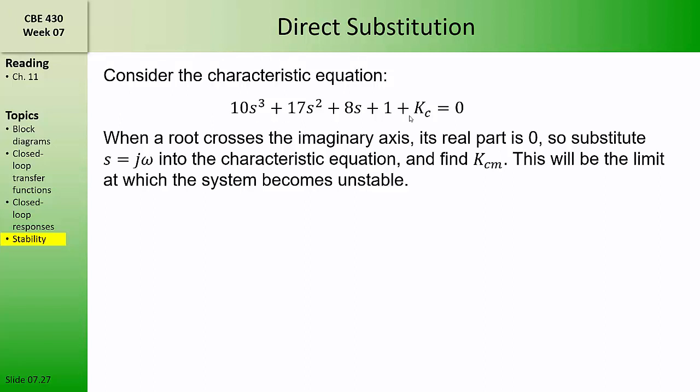Consider a characteristic equation that's third order in S and has an unknown variable Kc, the controller gain. We want to ask: for what values of the controller gain is a process with this characteristic equation going to be stable? We know that when a root of the characteristic equation crosses the imaginary axis from the left-hand side to the right-hand side, that root represents an unstable pole of the closed loop transfer function. At the crossing point, its real part is zero and its imaginary part may be non-zero. So to find Kc representing a stability limit, we substitute S equals J omega into the characteristic equation. The value of Kc obtained is called Kcm, representing either a minimum or a maximum of Kc.